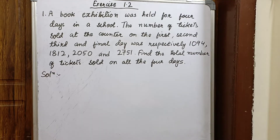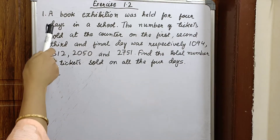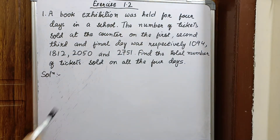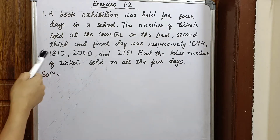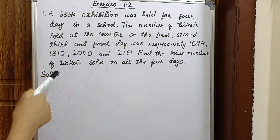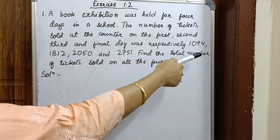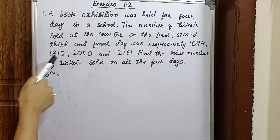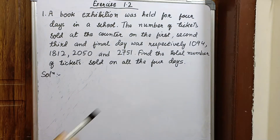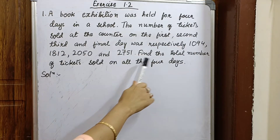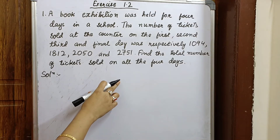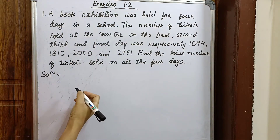The first question: a book exhibition was held for four days in a school. The number of tickets sold at the counter on the first, second, third and final day was respectively 1094, 1812, 2050 and 2751. We'll find out the total number of tickets sold on all four days.